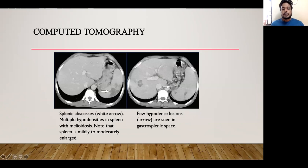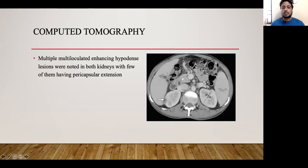Multiple hypodense lesions were noted in the spleen, consistent with splenic abscess in melioidosis. The spleen was mildly to moderately enlarged, and a few hypodense lesions were seen in the gastrosplenic space. Multiple multi-loculated enhancing hypodense lesions were also found in both kidneys, with a few showing pericapsular extension, as demonstrated in the images.